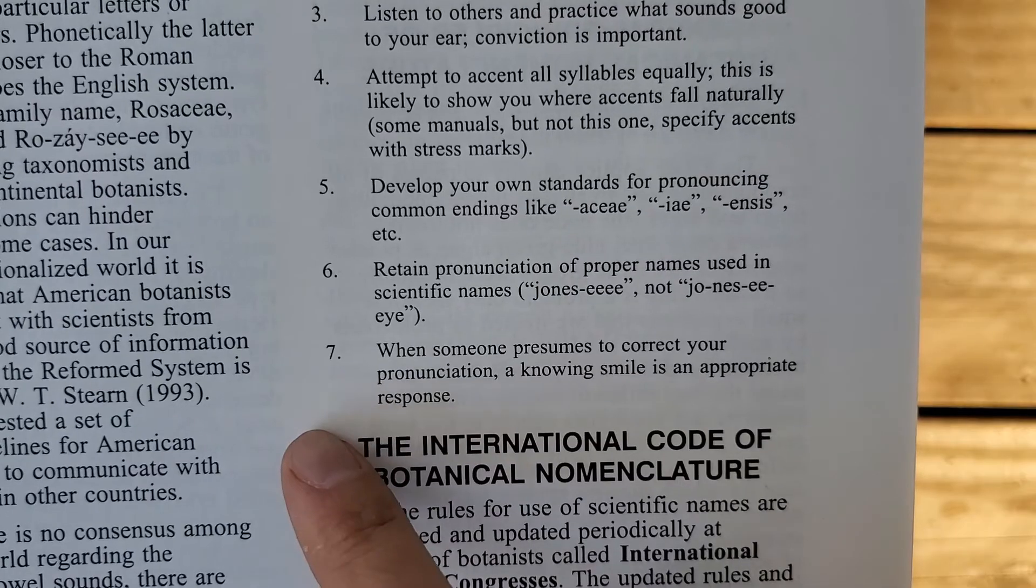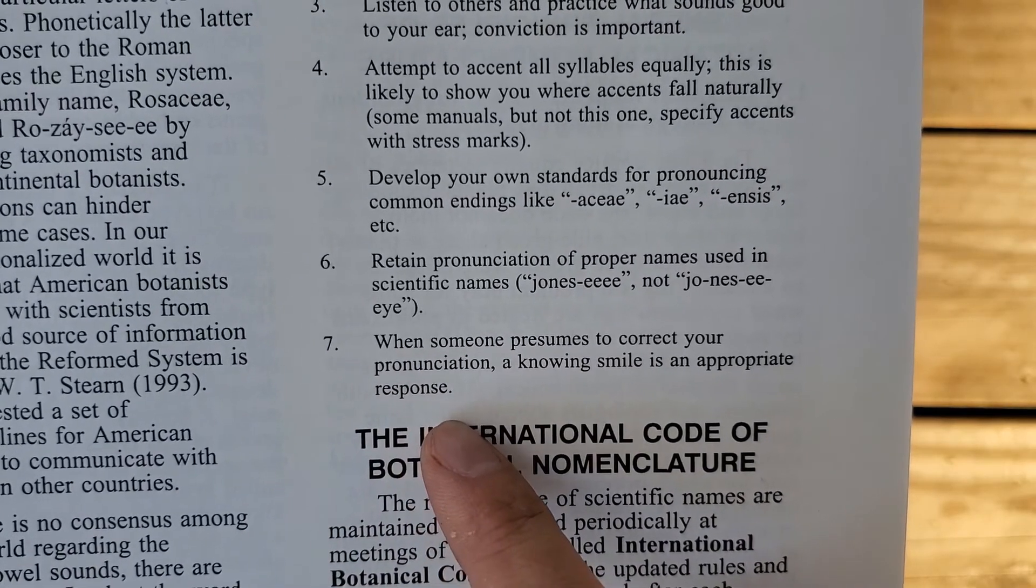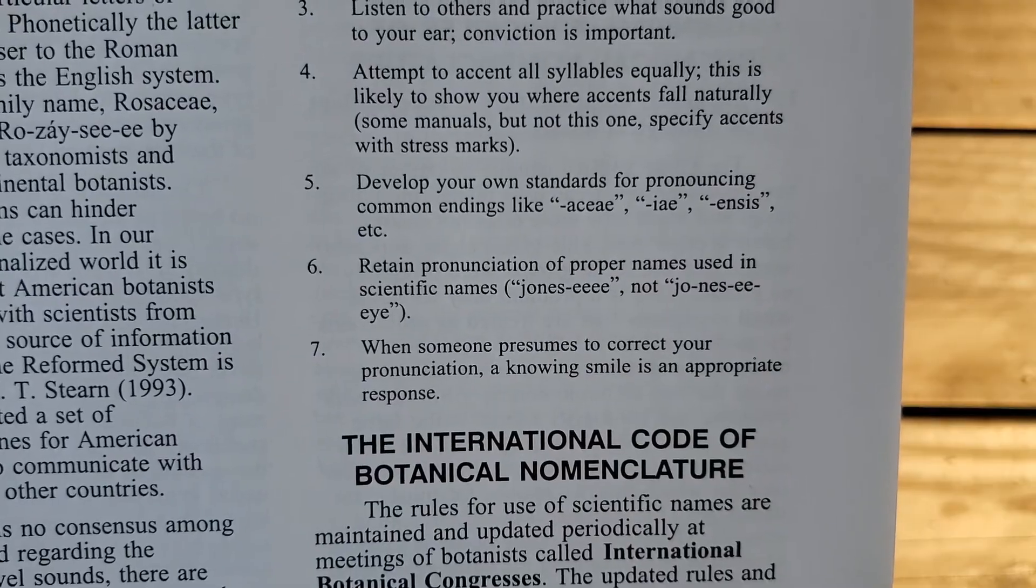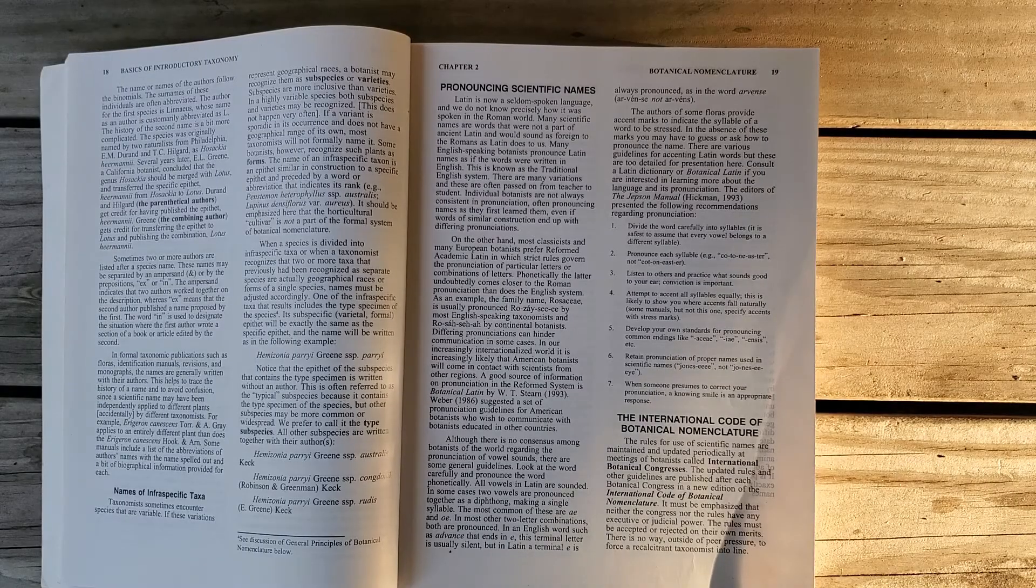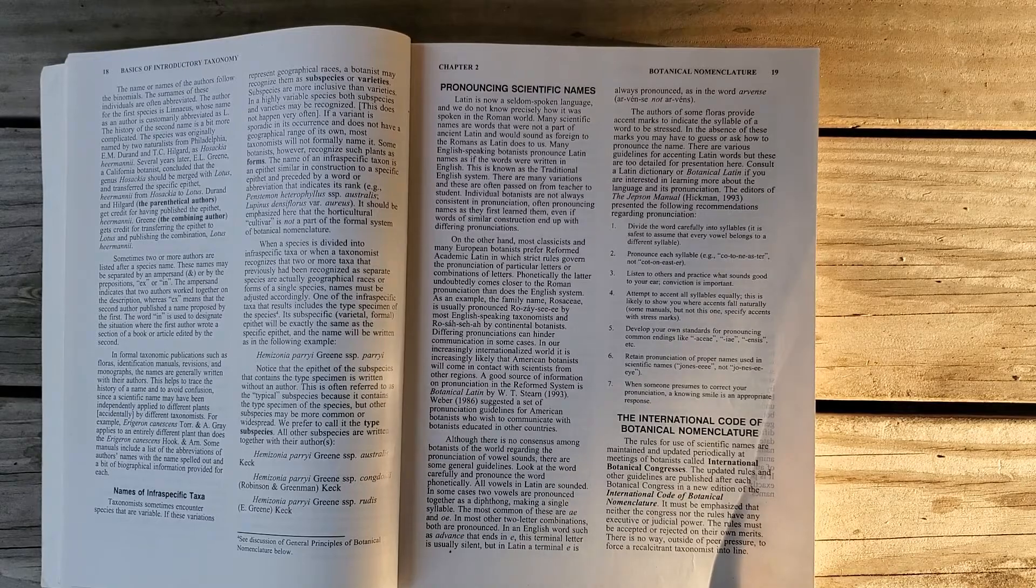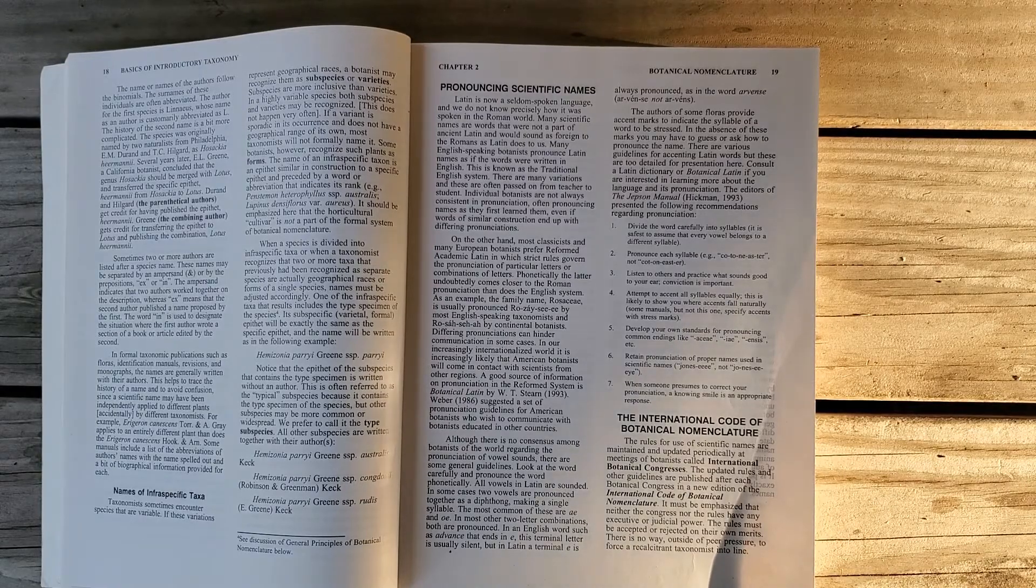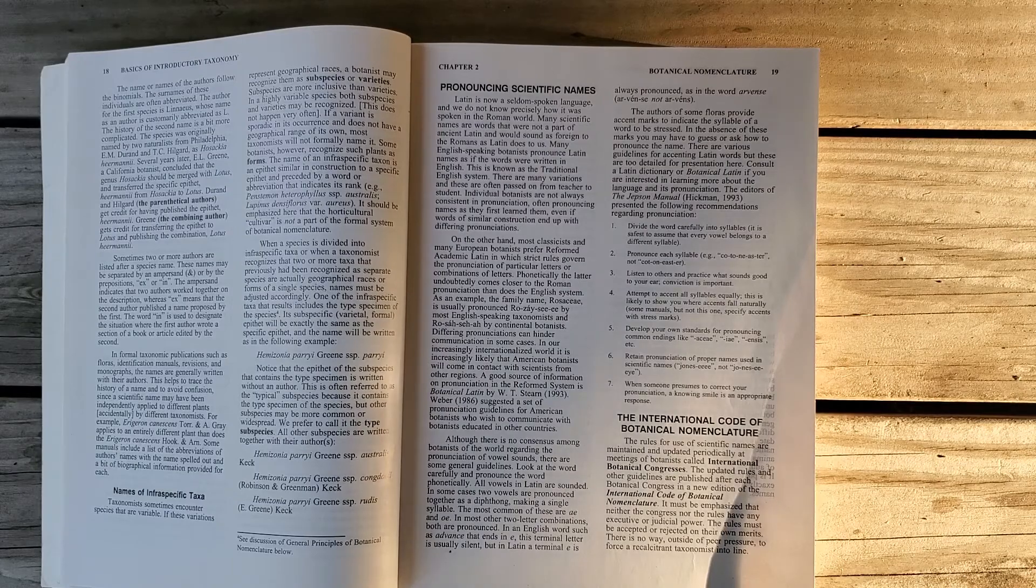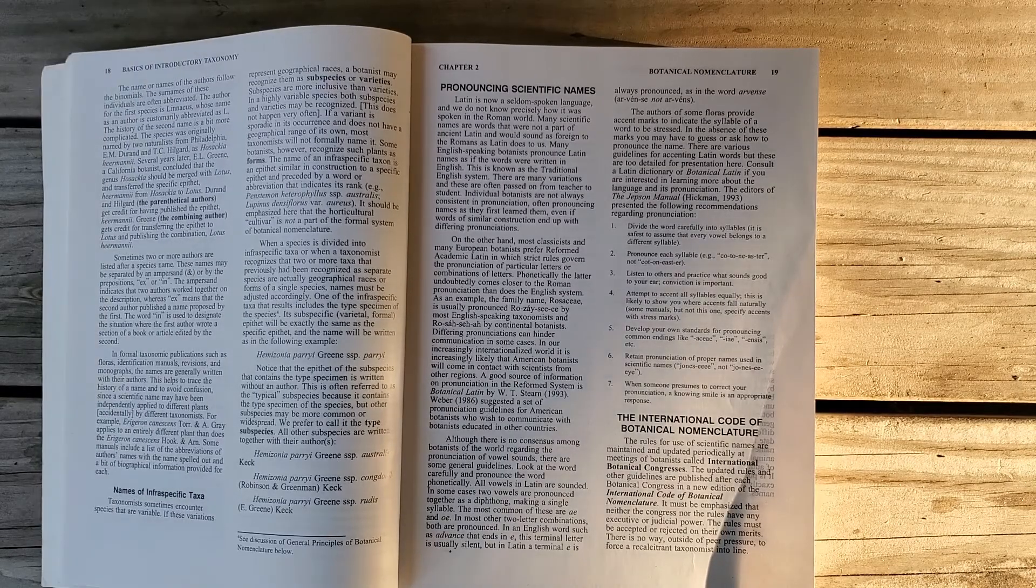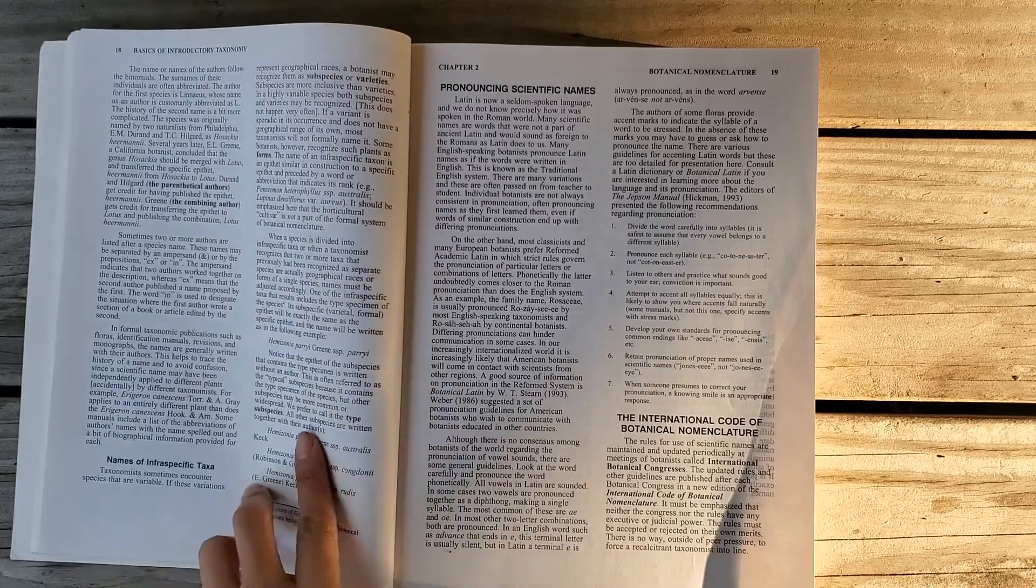And this last one is key. When someone presumes to correct your pronunciation, a knowing smile is an appropriate response. If someone's really insistent that their way is correct, or they're really arrogant about it, they're probably wrong. Just speak confidently, clearly, and if someone knows that name, they're going to be able to figure it out. And that's the most important part.